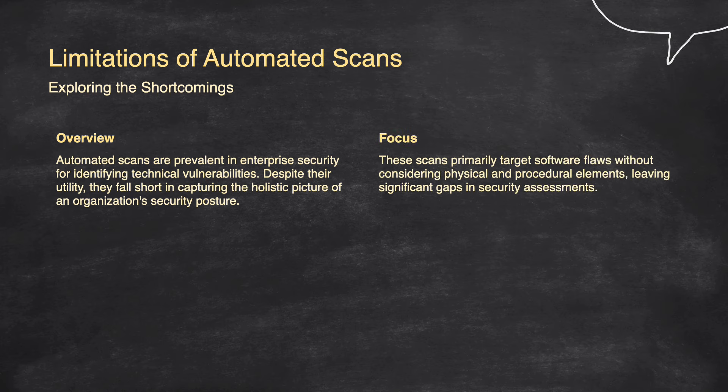Focusing on the limitations: automated scans primarily target software flaws without considering physical and procedural elements, leaving significant gaps in security assessments. They often miss how issues impact interconnected systems, produce false positives and negatives, and struggle with complex threats. By focusing only on technical vulnerabilities, they overlook weaknesses in processes, human behavior, and physical security. As a result, these scans need to be part of a broader security strategy that includes human expertise and manual assessments to provide a comprehensive security evaluation.